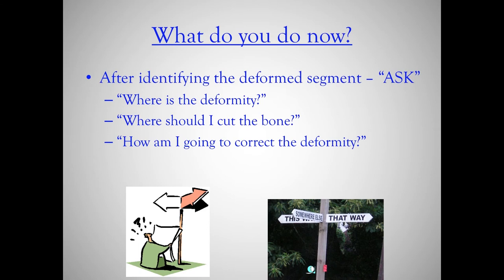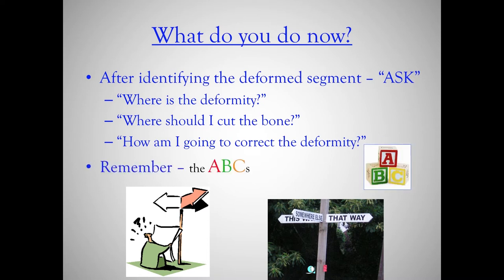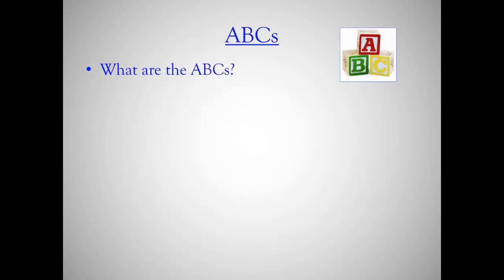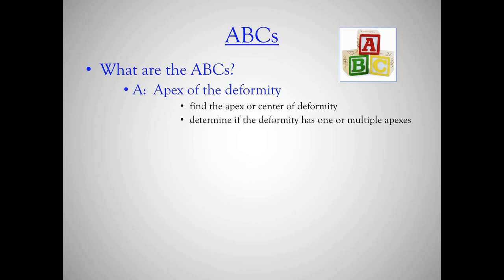But what do you do now? You have the deformed segment. You should ask yourself: where is the deformity? Where should I cut the bone, and how am I going to correct the deformity and make it straight? Remember the ABCs. First, you want to find the apex of the deformity — this is the center of the deformity — and determine if the deformity has one or multiple apices.